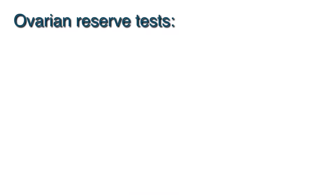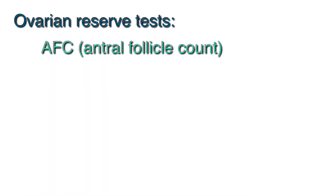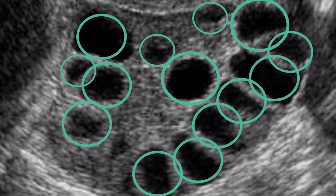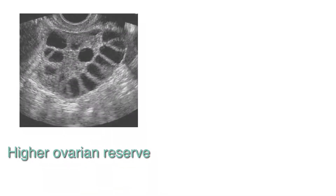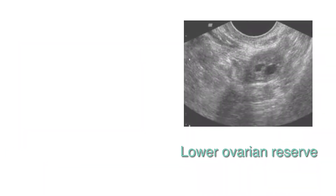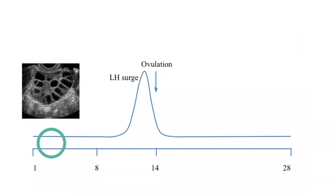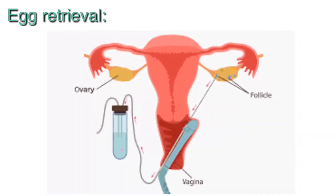Ovarian reserve is a term that we use to describe the remaining egg supply and fertility potential that a woman has. The first test we'll talk about is AFC, which stands for antral follicle count. The antral follicle is a small fluid-filled sac that contains an immature egg within it. The total number of follicles we are able to count is called the antral follicle count. The higher the number of follicles, the better the ovarian reserve, and the lower the number of follicles, the lower the ovarian reserve. The ideal time to count the follicle number is at the beginning of the cycle, such as cycle day 2 to 4, and the antral follicle count can also give us an estimate of how many eggs we may retrieve with fertility treatments such as IVF.